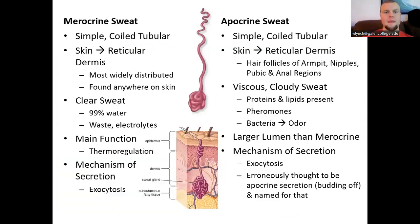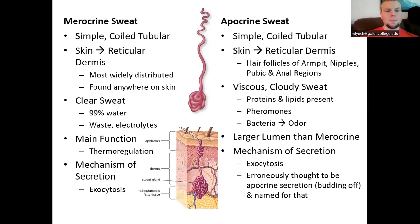Eccrine sweat glands are simple coiled tubular glands located in the reticular dermis and found all over the body surface. They secrete normal sweat that is 99% water. Their main function is thermal regulation, and their mechanism of secretion is exocytosis.